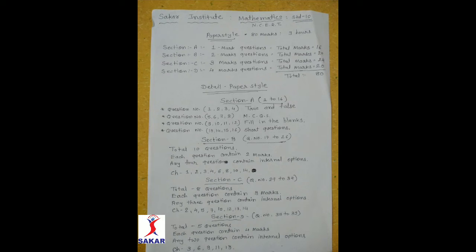In Section B, there are question numbers 17 to 26. Section B contains total 10 questions, each question carrying 2 marks. Any 4 questions contain internal options. In this section, questions are from chapters 1, 2, 3, 4, 6, 8, 10 and 14. From these 8 chapters, any 10 questions are asked.